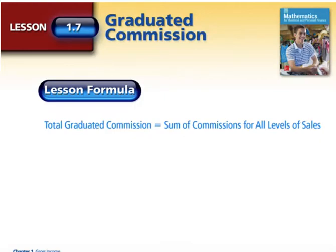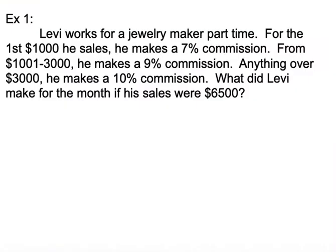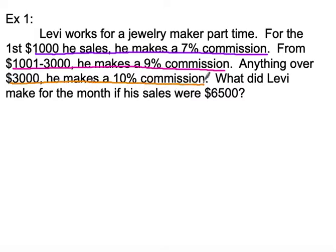Let's look and see how this works. Levi works for a jewelry maker part-time. For the first $1,000 he sells, he makes a 7% commission — that's going to be our first level. His second level is from $1,001 to $3,000, he makes 9% commission. And then anything over $3,000, he's going to make a 10% commission.